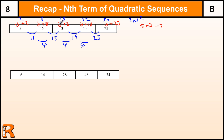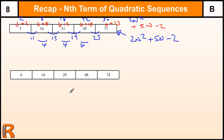So we've got 2n squared, and then I'm adding 5n minus 2. So my overall sequence — this one I wanted — is 2n squared plus 5n minus 2.